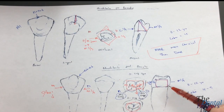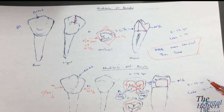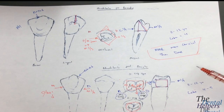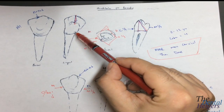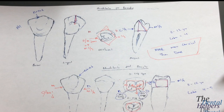Some key points: the mandibular first premolar is going to be slightly larger than the mandibular second. In terms of the coronal outline, there's a bump that forms creating a smaller lingual embrasure — meaning there's a smaller space when looking at the lingual embrasure — and there's going to be less of a lingual crown tilt.